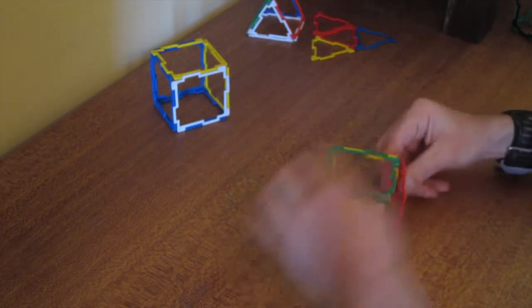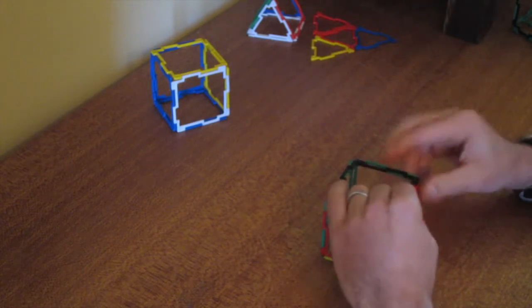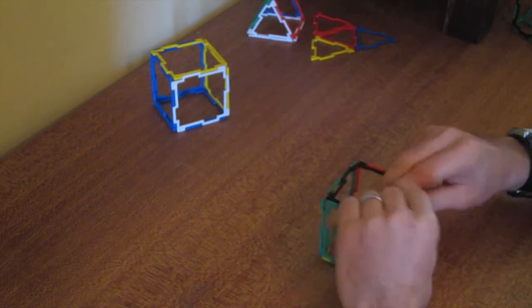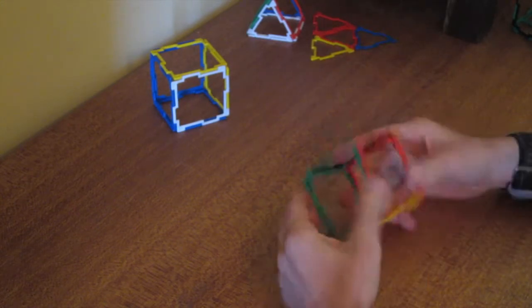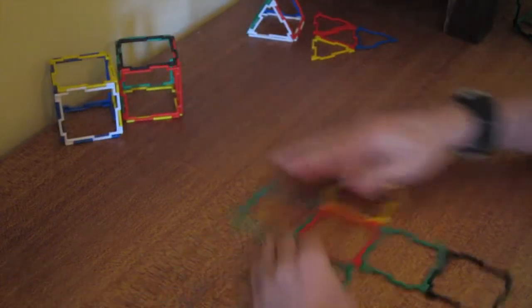A 3D cube shape. As you can see, a net - a two-dimensional plan - and then you fold it up and it creates a really nice shape for you.